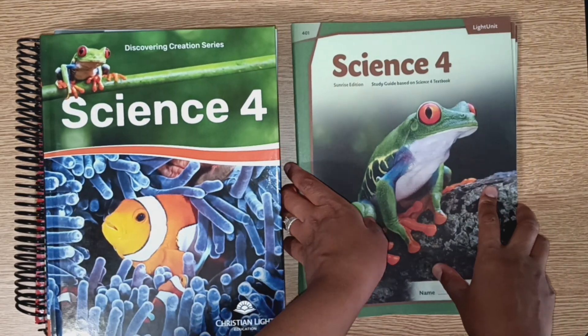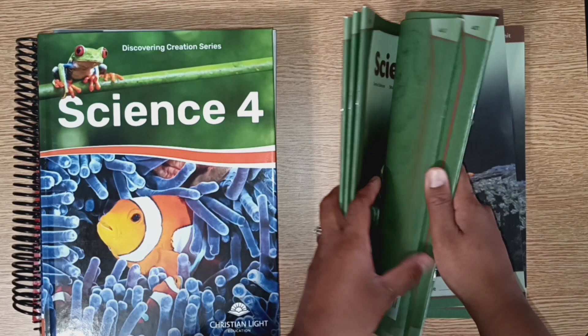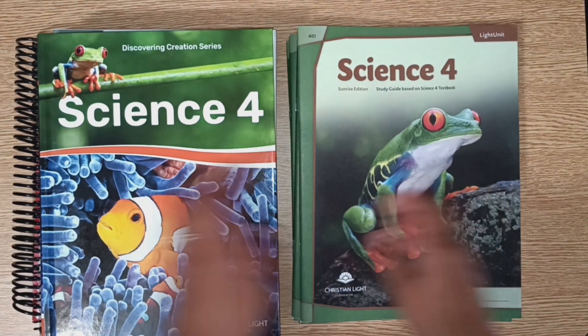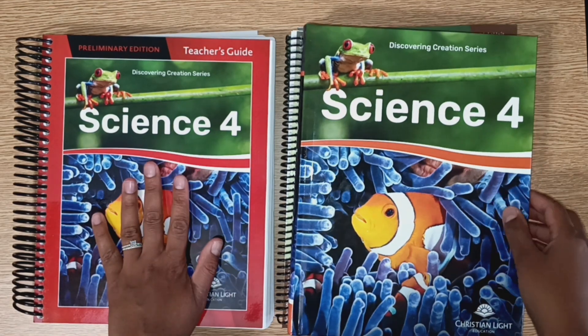It also comes with five light units for a total of 80 lessons. There's two quizzes and one test per light unit, and then there's also an optional teacher guide which we'll take a look at.